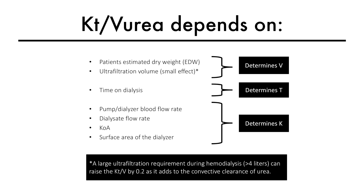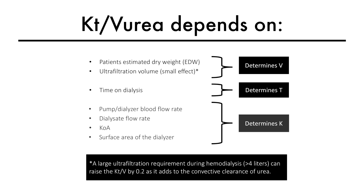Therefore, ultimately, KT over V urea for a hemodialysis session depends on the volume of distribution of urea, time on dialysis, dialyzer blood flow rate, dialysate flow rate, and dialyzer KOA.